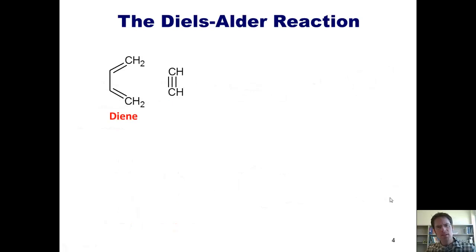There's a tremendous amount of variety that one can incorporate into the Diels-Alder reaction. For example, if we use an alkyne as a dienophile instead of an alkene, then these electrons will do the Diels-Alder rearrangement.